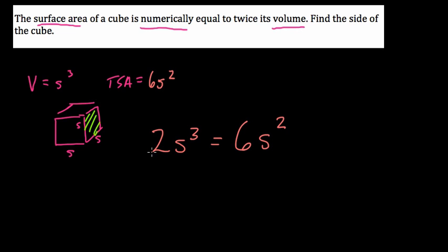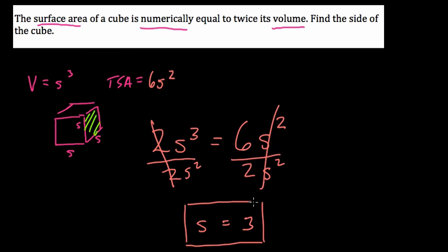So how long is each side? Well, we just solve for S. I divide both sides by 2 and divide both sides by S squared at the same time, because this will cancel out. 6 divided by 2 is 3, and S to the third divided by S squared is just S. So each side length is equal to 3.